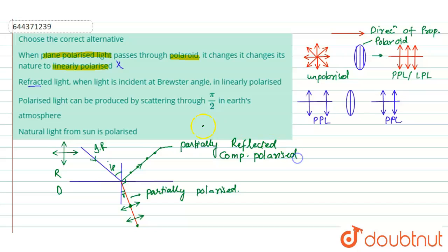This makes statement two also incorrect, because it claims that the refracted light will be linearly polarized. In fact, it is the reflected ray that becomes completely polarized at Brewster's angle. Now let us analyze the third statement, which says polarized light can be produced by scattering through π/2 in the Earth's atmosphere.